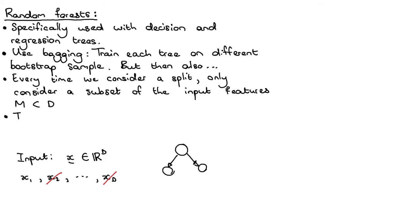And very often a good choice for m is the square root of d. Then at the end what I do to get the prediction from my model is I combine all the different trees.